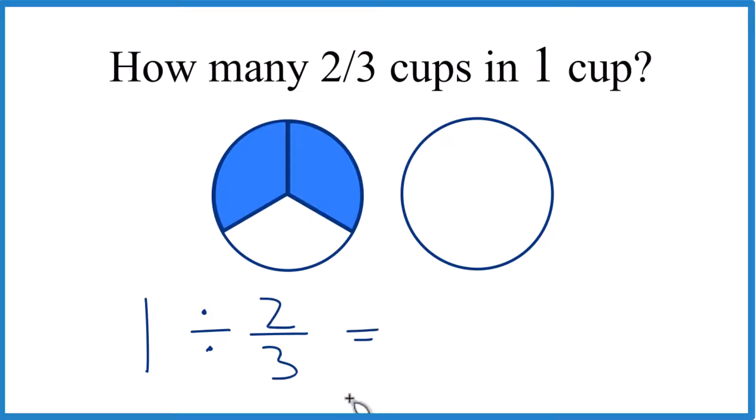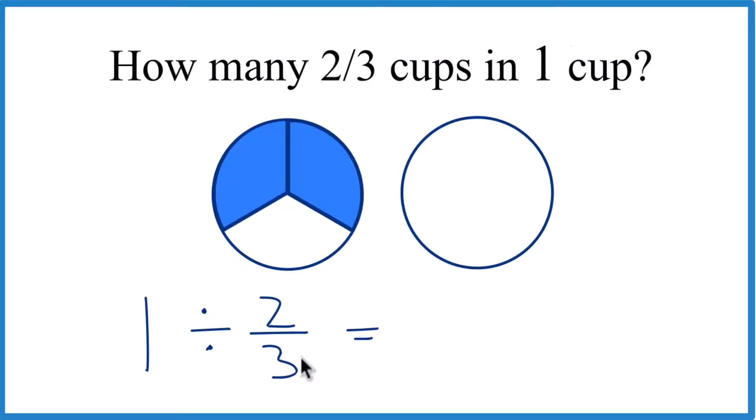And the way we can do this is we can take the reciprocal of two-thirds, move the three to the top, two to the bottom. So three over two, that's the reciprocal of two-thirds.